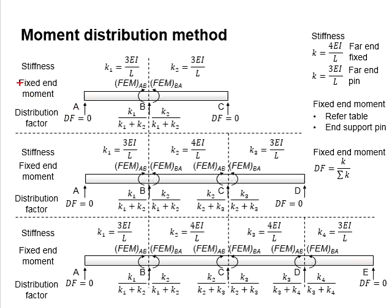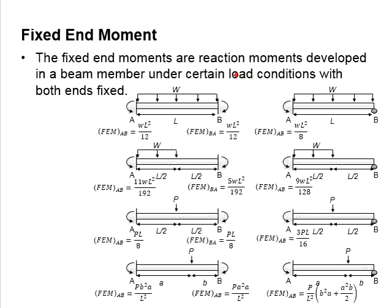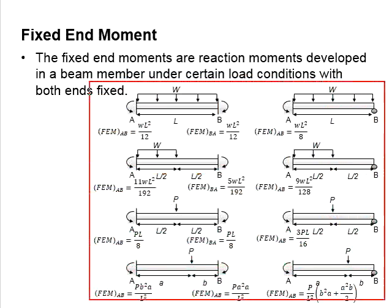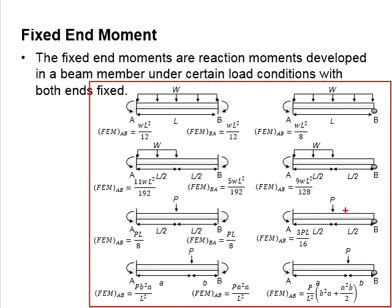Next, we discuss the fixed-end moment. The fixed-end moment is dependent on the loading, the span, and the support conditions. Different conditions lead to different magnitudes of fixed-end moment. The equations for fixed-end moment can easily be obtained from typical tables. The slide here outlines different types of fixed-end moment under several typical loading conditions commonly encountered in RC structures.